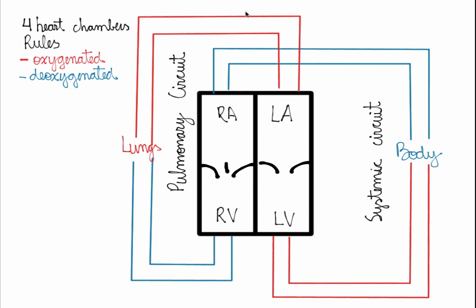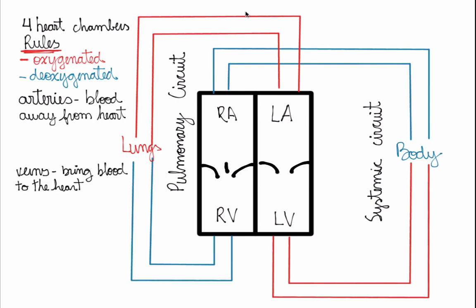Now we'll add more rules. Arteries take blood away from the heart — all arteries take blood away from the heart. All veins bring blood to the heart. Because of that, all arteries leave from ventricles and all veins arrive at atria, since the atria are the receiving chambers and the ventricles are the pumping chambers.